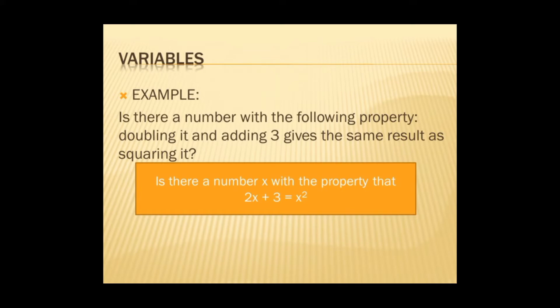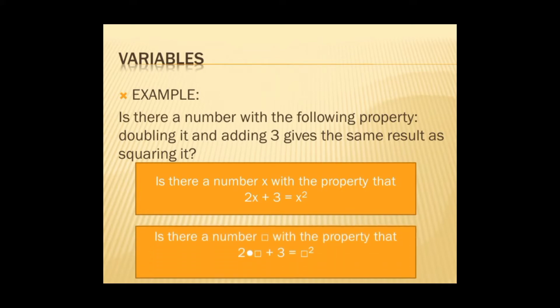Next: Is there a number? We replace it with a box now. So with the property that 2 times box plus 3 equals 2 times box squared.